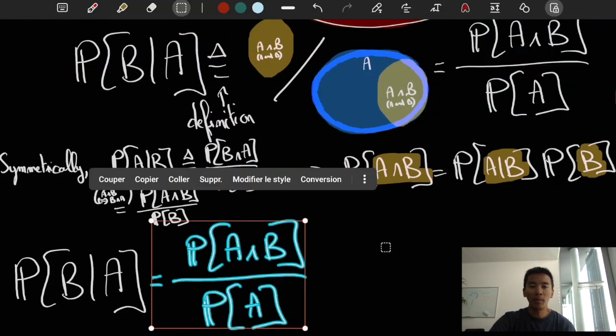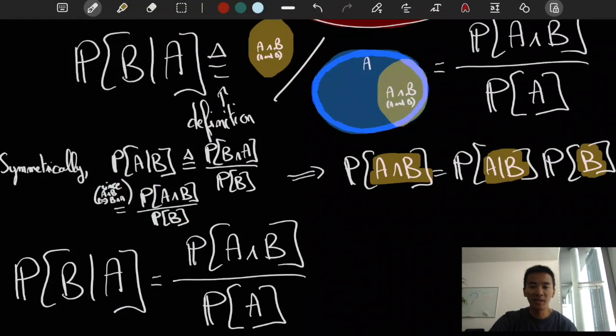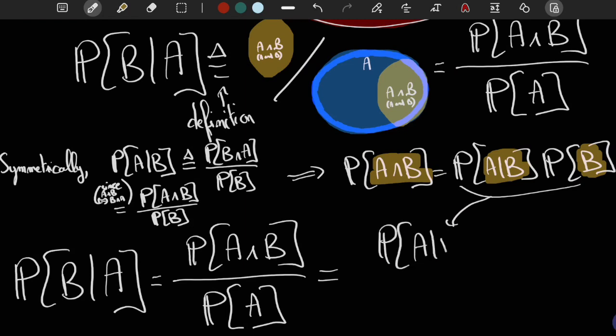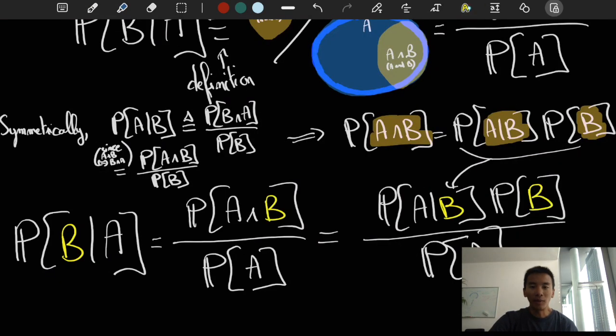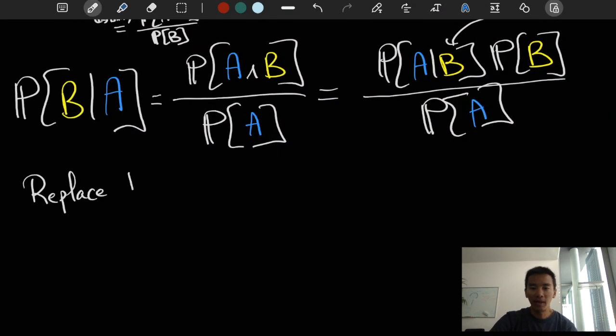Now, if we replace probability of A and B in the expression of the definition of probability of B given A, we obtain the classical form of Bayes' rule, namely probability of B given A is equal to the probability of A given B times the probability of B divided by the probability of A. But that's not what we had. For one thing, we need to replace A and B by the letters D and T.